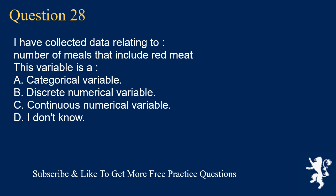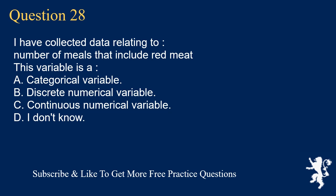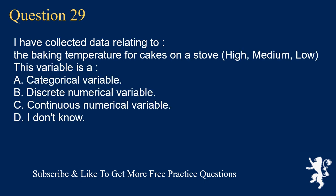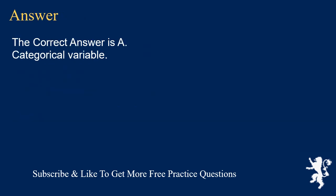Question 28: I have collected data relating to the baking temperature for cakes on a stove — high, medium, low. This variable is A. a categorical variable, D. I don't know. The correct answer is A, categorical variable.